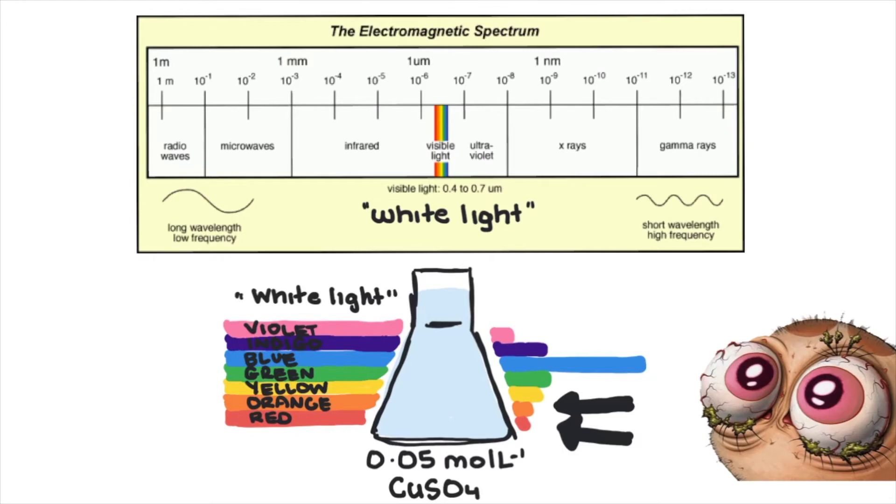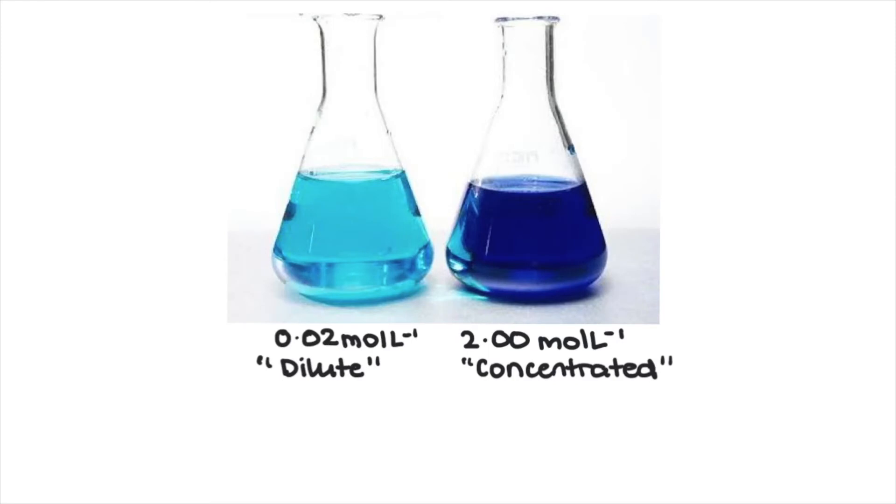So if given samples of copper sulfate, we should be able to guess the concentration by the intensity of the color in the solution. You would have seen in the lab the difference between a concentrated and dilute solution of copper sulfate. A more concentrated solution tends to have a richer blue color.